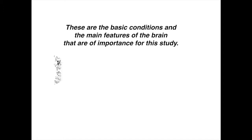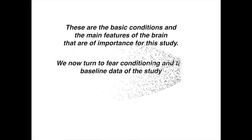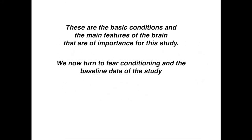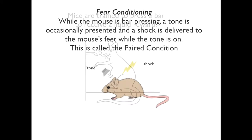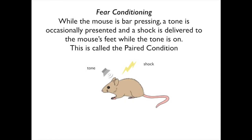We have considered the basic conditions and main features of the brain important to this study. We now turn to fear conditioning and the baseline data. The first thing the investigators did was to train mice to press a bar to receive a liquid reward. Now it comes to fear conditioning.